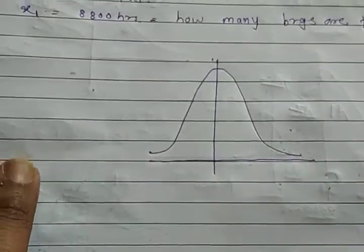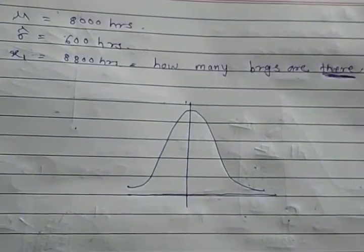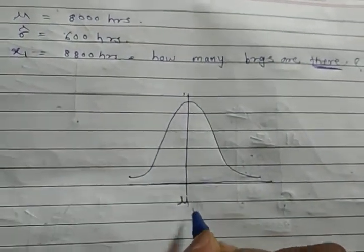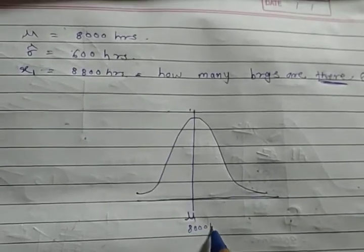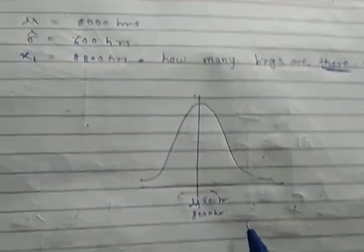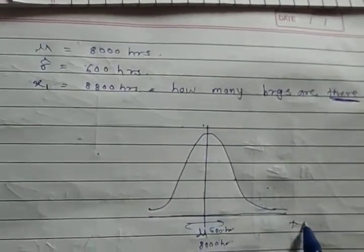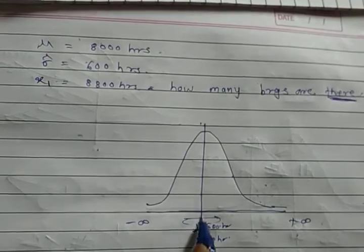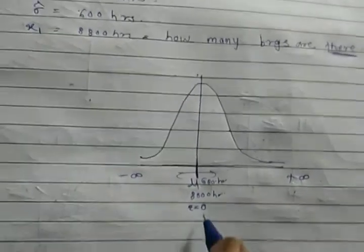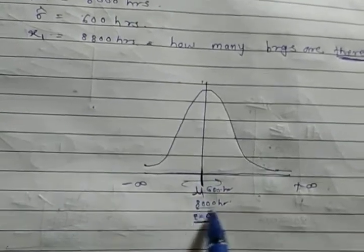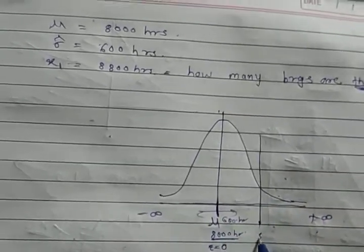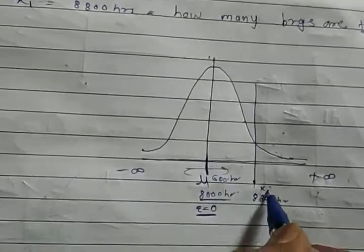I will draw the normal distribution curve for better understanding. The mu value is 8,000 hours, with a standard deviation of 600 hours. The curve goes to positive infinity on one side and negative infinity on the other. The Z value at the mean is exactly zero, corresponding to 8,000 hours. X1 is located at 8,800 hours, to the right of the mean.